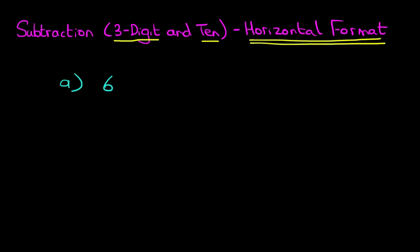What is 645 minus 10? So 645 minus 10. Now, let's have a look at the number 10. For the number 10, we've got, and we're just going to label the columns, the digits.